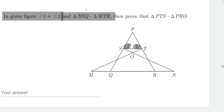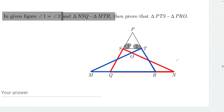The triangles which are given similar are NSQ and the other triangle is MTR. So these two triangles NSQ and MTR are given similar, and the two angles — angle 1 and angle 2 — are given equal.